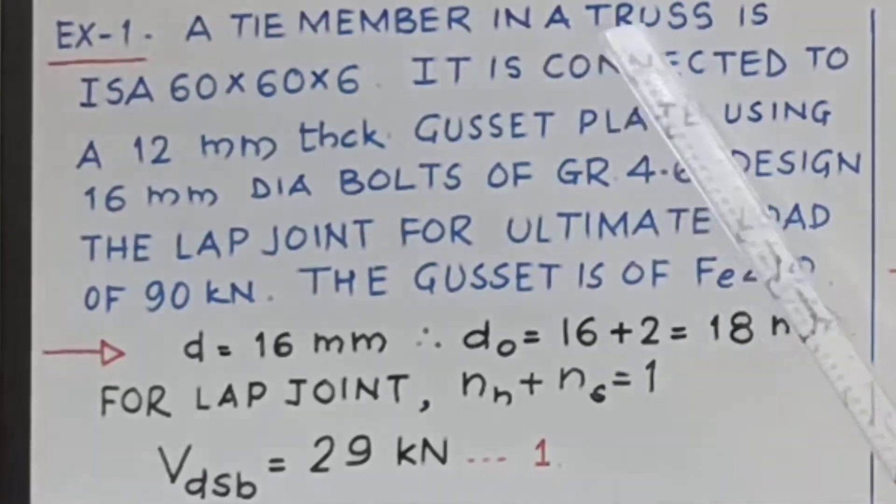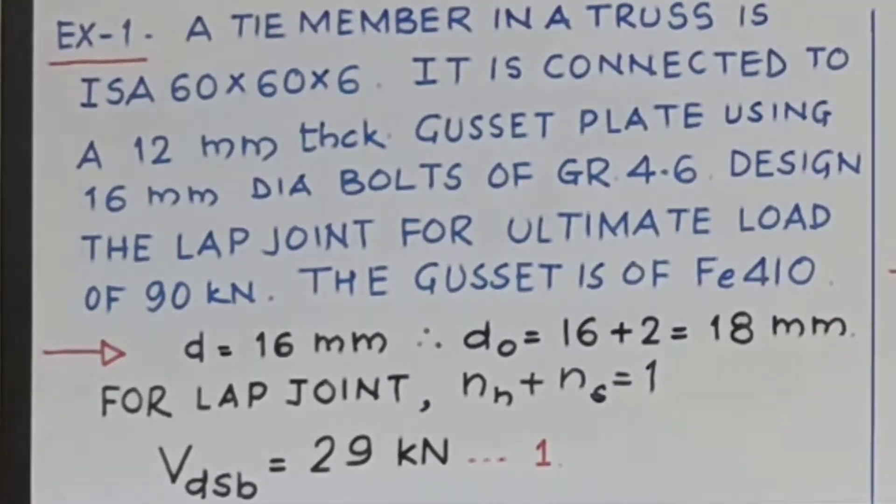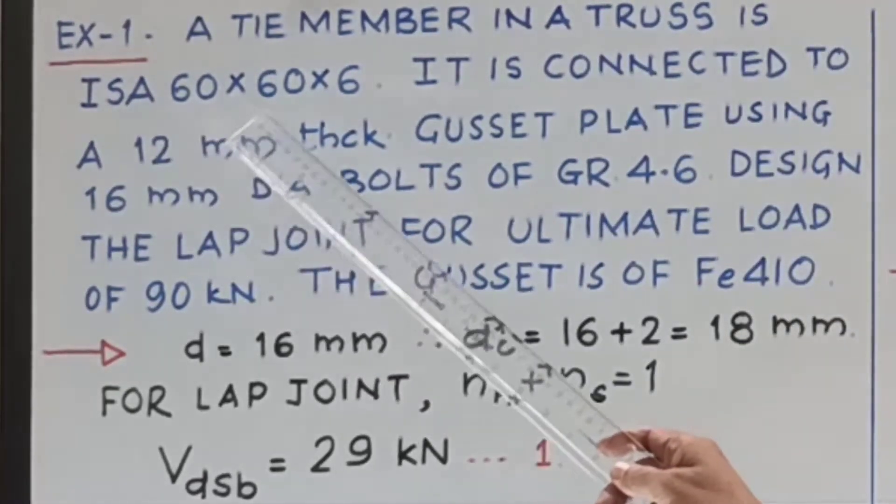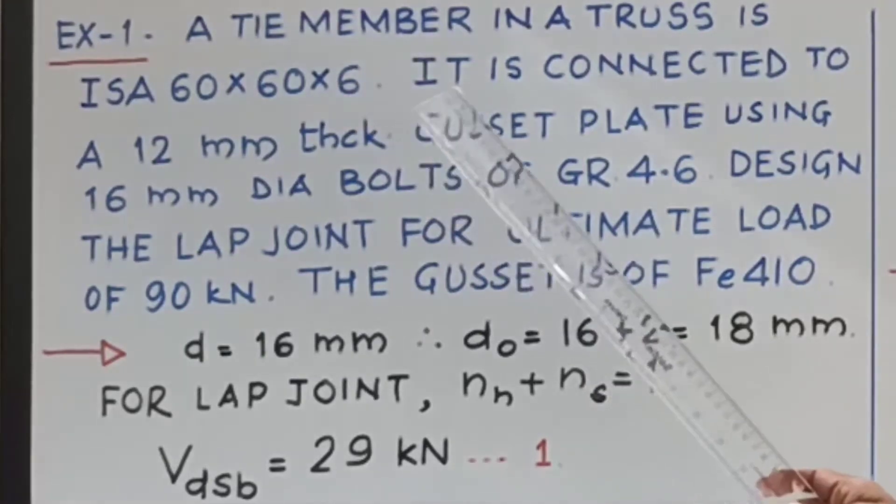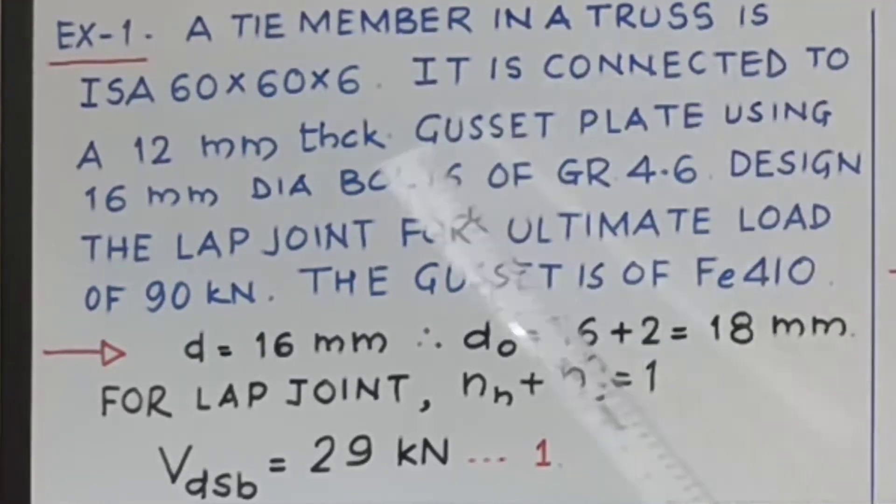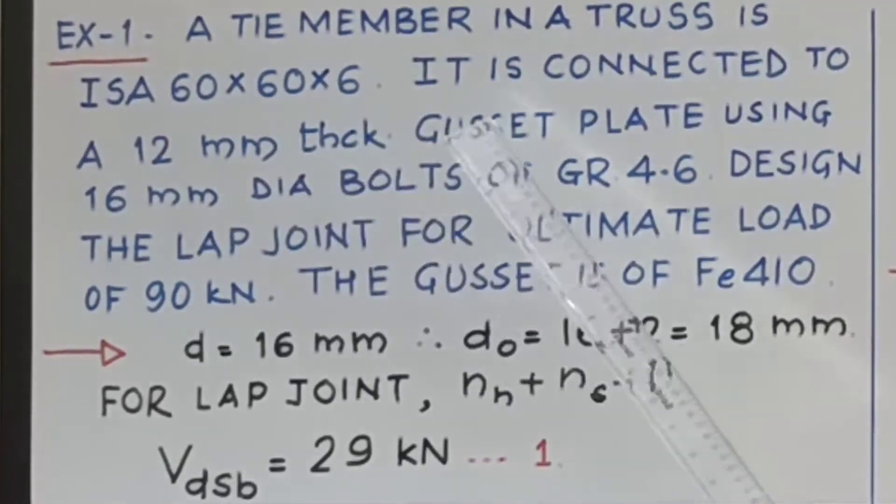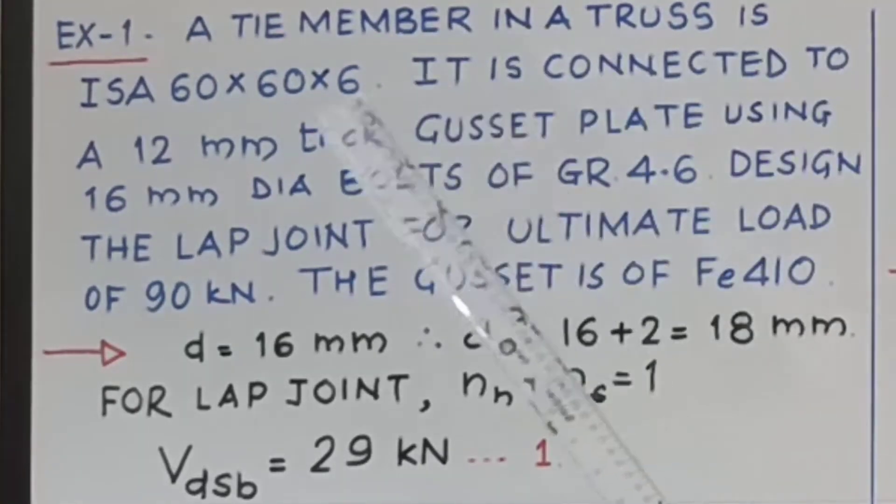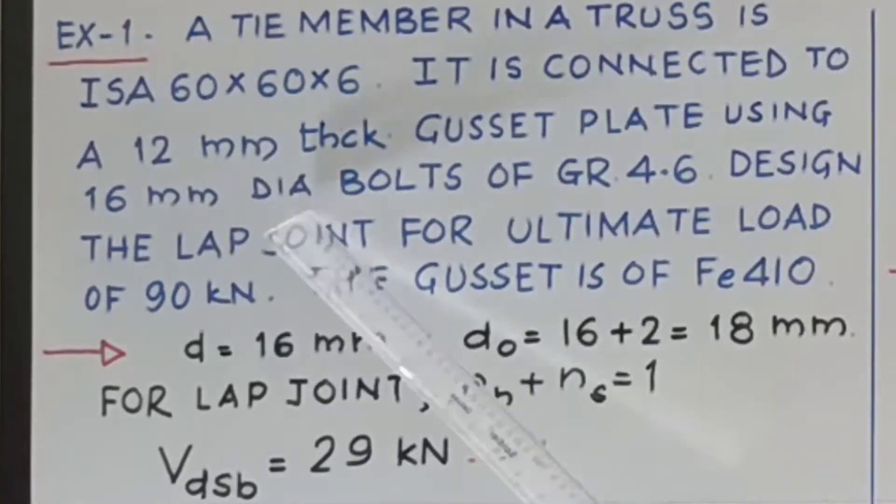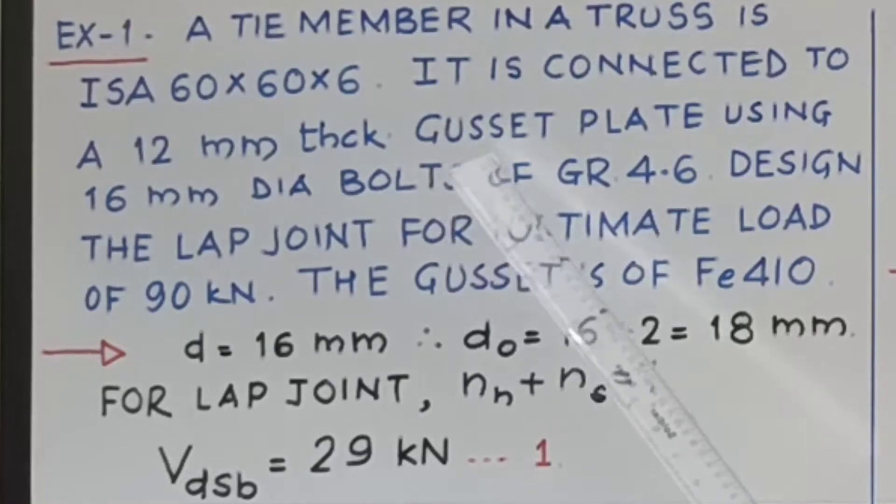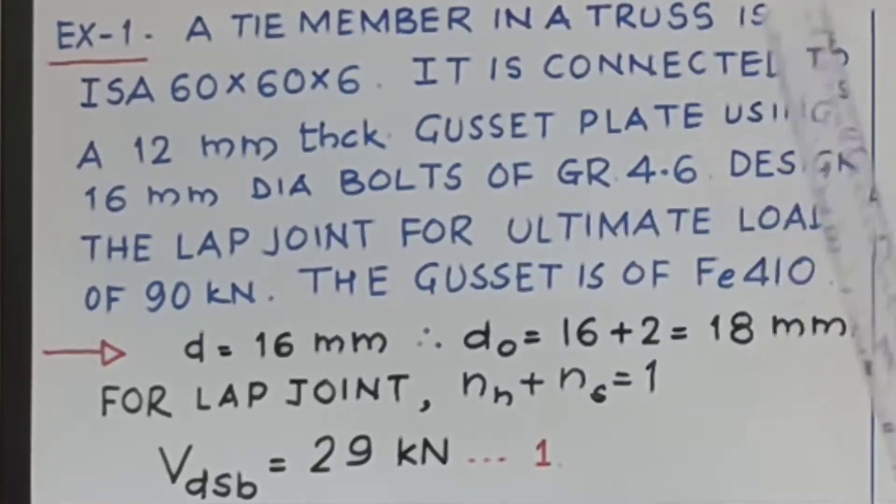A tie member in a roof truss is ISA 60 by 60 by 6. It is connected to a 12 mm thick gusset plate using 16 mm diameter bolts of grade 4.6. Design the lap joint for the ultimate load of 90 kilonewton. The gusset plate is of grade FE 410.